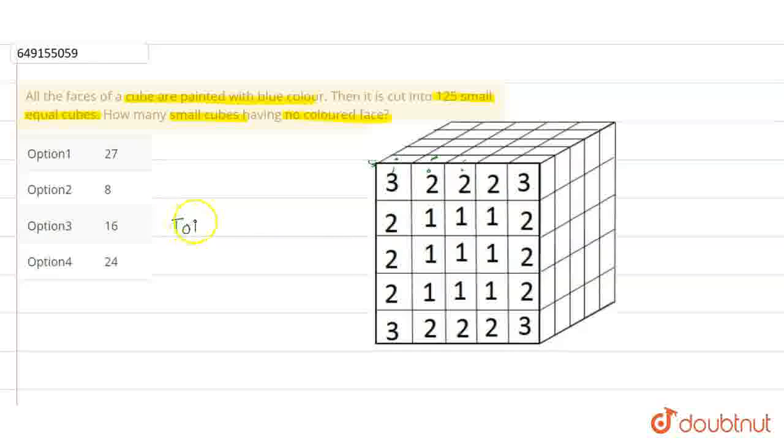The total is 125 small cubes. Let's find the number of cubes that have 3 surfaces colored. Here, the cubes with 3 surfaces colored are the corner cubes.